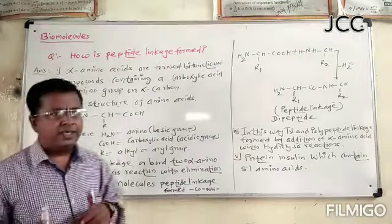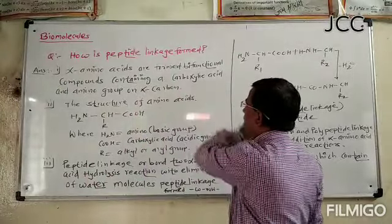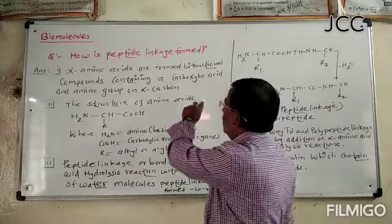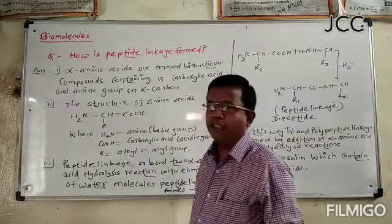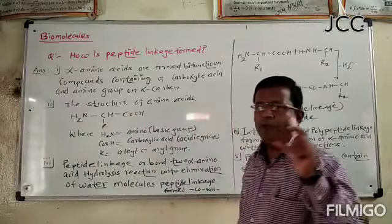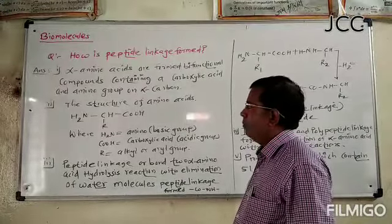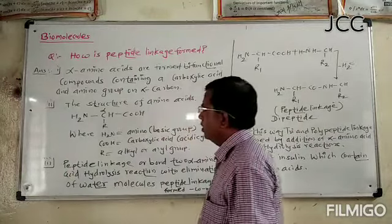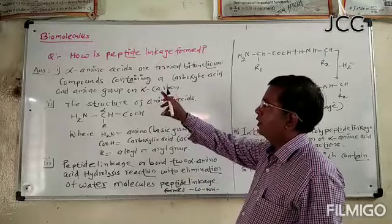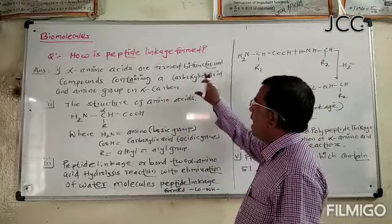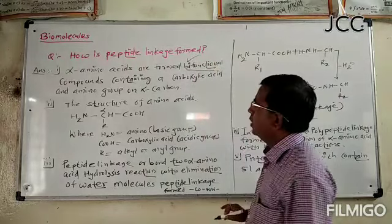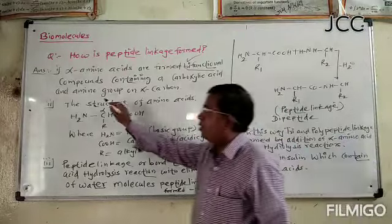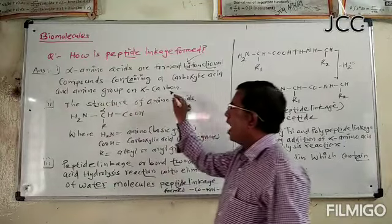Alpha amino acids are functional compounds containing carboxylic acid and amino groups. Two functional compounds containing carboxylic acid, acyl group, and amino group. The amino group means basic group, attached to alpha carbon atoms.